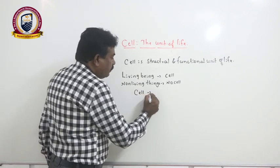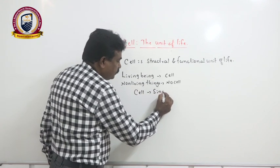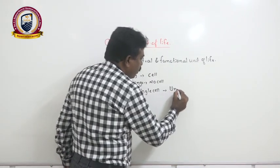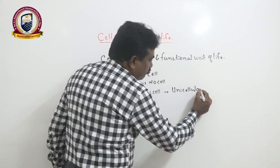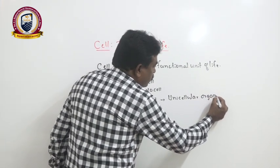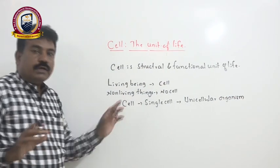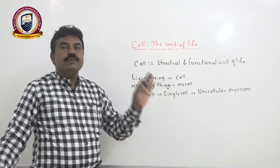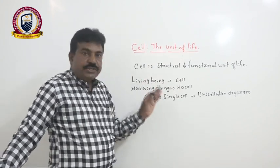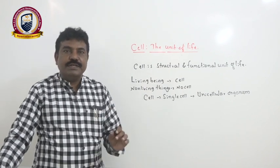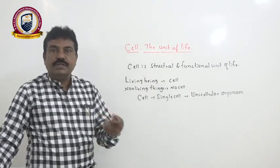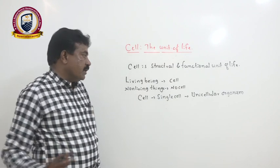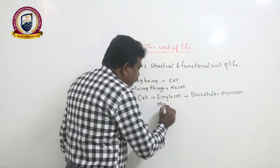An organism may be formed by a single cell — these are called unicellular organisms. It is wonderful that in unicellular organisms, the single cell itself performs all functions: digestion, respiration, excretion, circulation, movement, reproduction, and cellular continuity. All living being characters can exist in a unicellular organism.